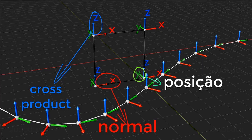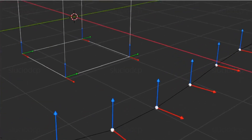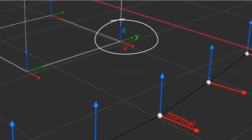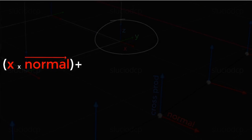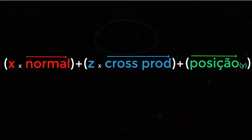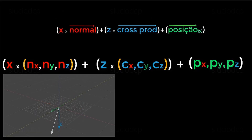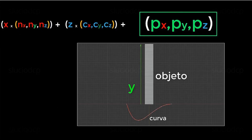To do this, we'll map the x value of each object vertex to the normal vector of the corresponding curve point, the z value of each vertex to the cross product of that point, and the y value will be mapped to the curve point's position. Let's see how this is calculated. Each curve position is mapped to the parallelpiped's y-axis position, since in our example we're using this axis for deformation.